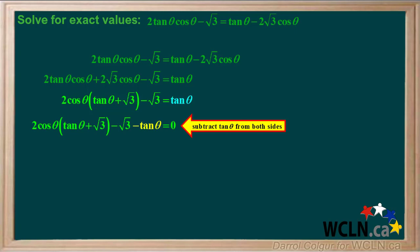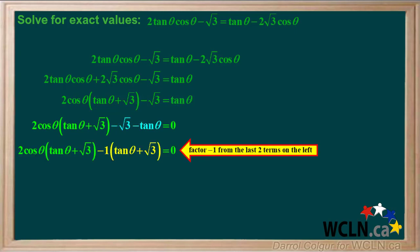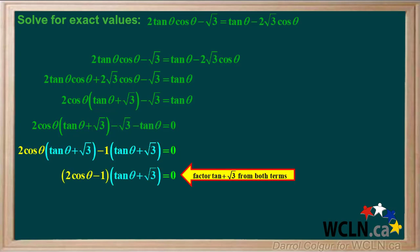We'll subtract tan theta from both sides to give us this. Factoring negative 1 from the last two terms on the left side will give us this equation. Factoring tan theta plus root 3 from both terms gives us this product of two factors.